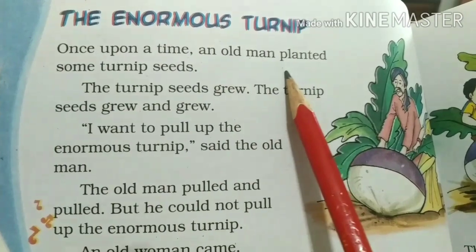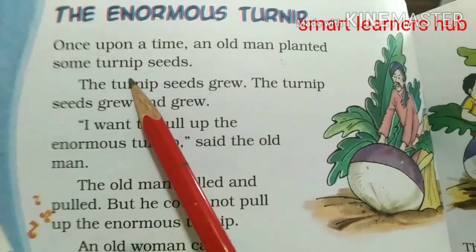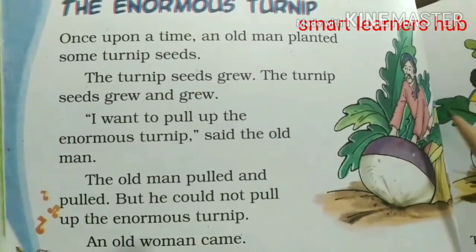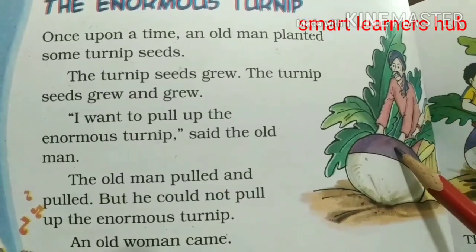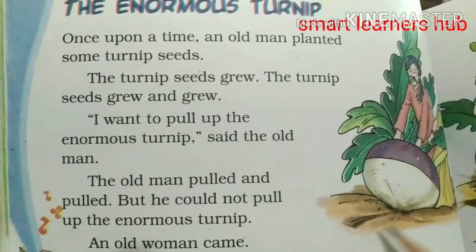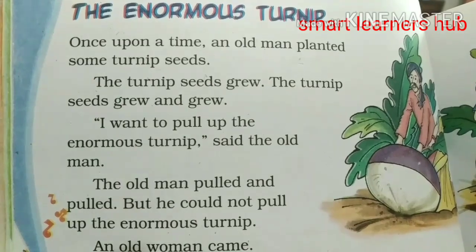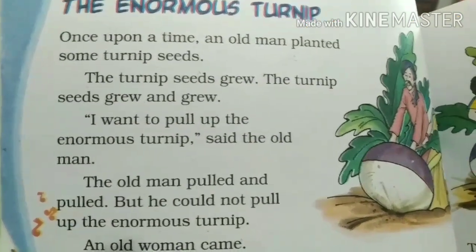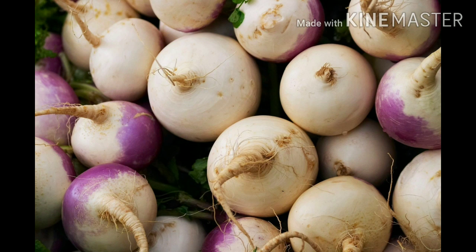Once upon a time, an old man planted some turnip seeds. You guys have seen turnip — it's a vegetable that we also eat. It is called Shaljam in Hindi. And the meaning of 'enormous' is 'vishal' — very big. So this chapter story is about an enormous turnip.